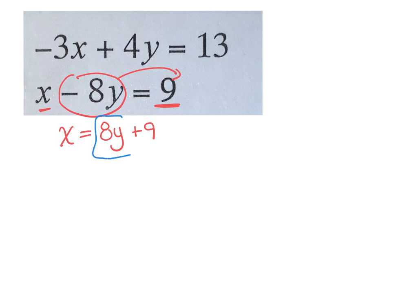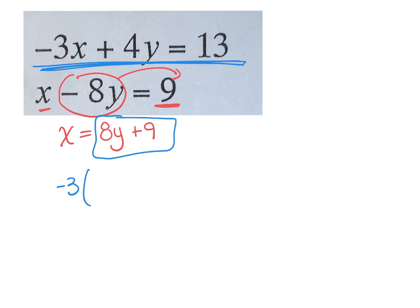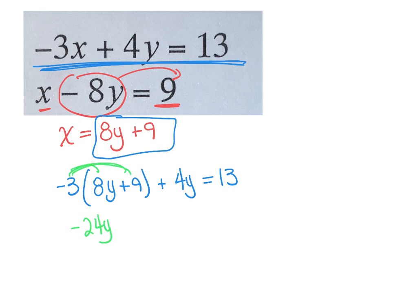Now I can take this group and plug it into the other equation for x. So I'm going to rewrite this equation right here and plug in that group for x. So negative 3, and instead of x, I'm going to write 8y plus 9, plus 4y equals 13. Distribute and solve. So negative 3 times 8 is negative 24y. Negative 3 times 9 is negative 27, plus 4y equals 13.